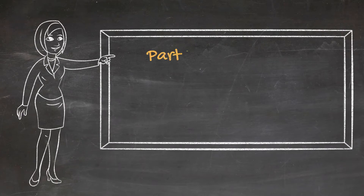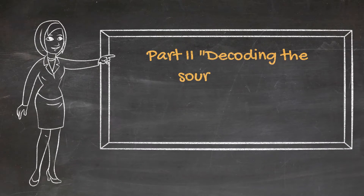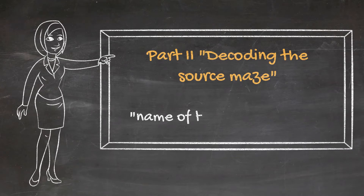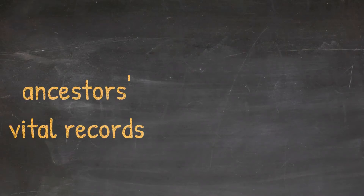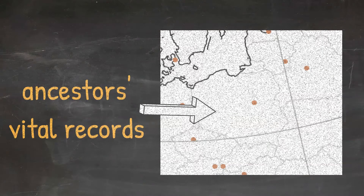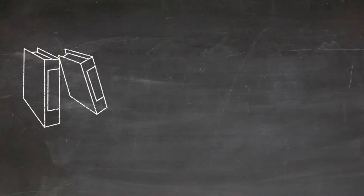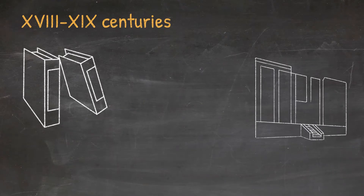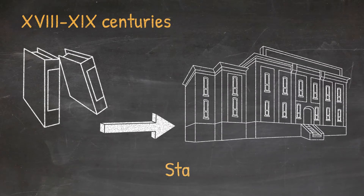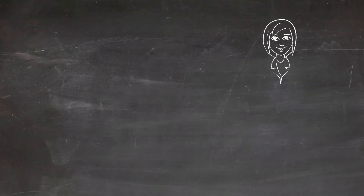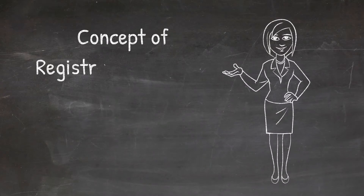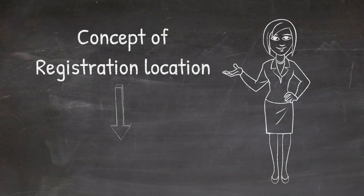In our previous episode titled Part 2: Decoding the Sources Maze, we explained how to find the name of the place of origin for your ancestor researching documents in your own country. But now it's time to learn how to find ancestors' vital records in Poland. Most vital record registers from the 18th and 19th centuries can be found in specific archives. Before we explain the process of how to locate those holders, we need to introduce you to the concept of Registration Location, which we will refer to as RL.